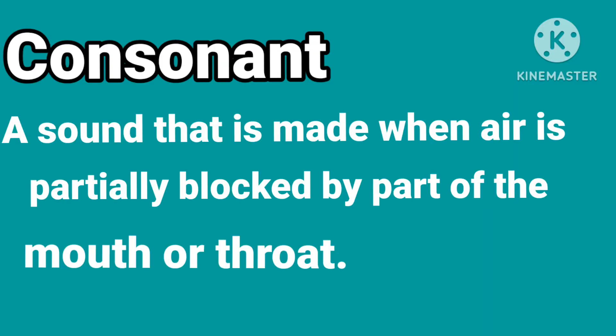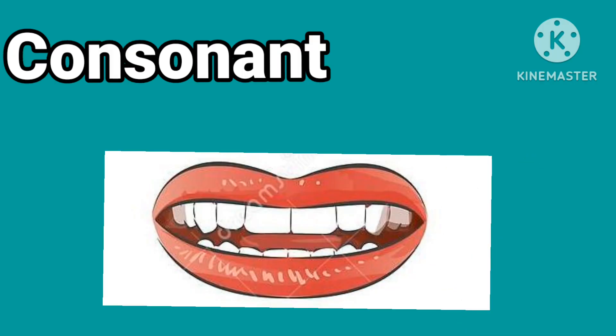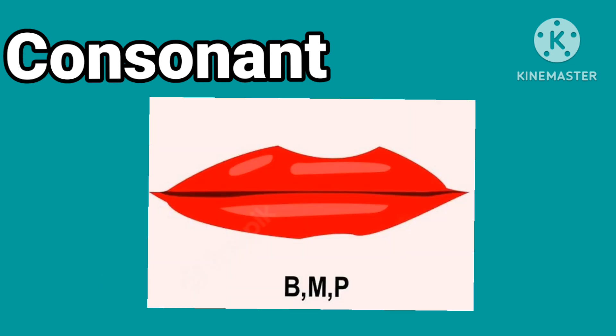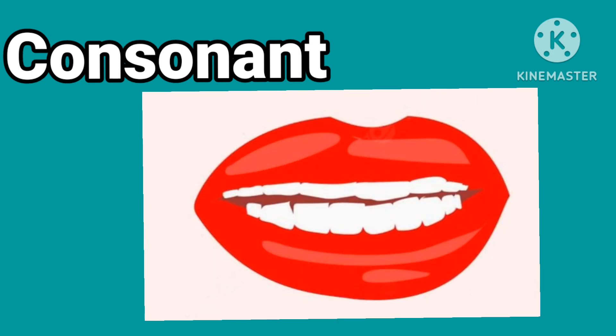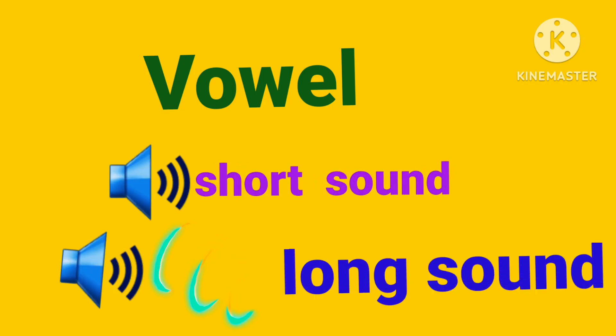And U. What is a consonant? A consonant is a sound that is made when air is partially blocked by part of the mouth or throat. For example, try to say B with your mouth open — is it possible? No, because you need to use your lips. Consonants are pronounced by stopping the air from flowing easily through the mouth, especially by closing the lips or touching the tip of the tongue.